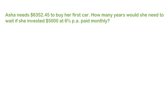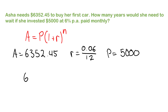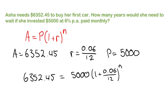Last question: Asha needs six thousand three hundred and fifty two dollars and forty five cents to buy her first car. How many years would she need to wait if she invested five thousand dollars at six percent per annum, paid monthly? This time we know A is six thousand three hundred and fifty two point four five, r is zero point zero six over twelve, and the principal is five thousand. Substituting: six three five two point four five equals five thousand times one plus zero point zero six over twelve to the power of n.